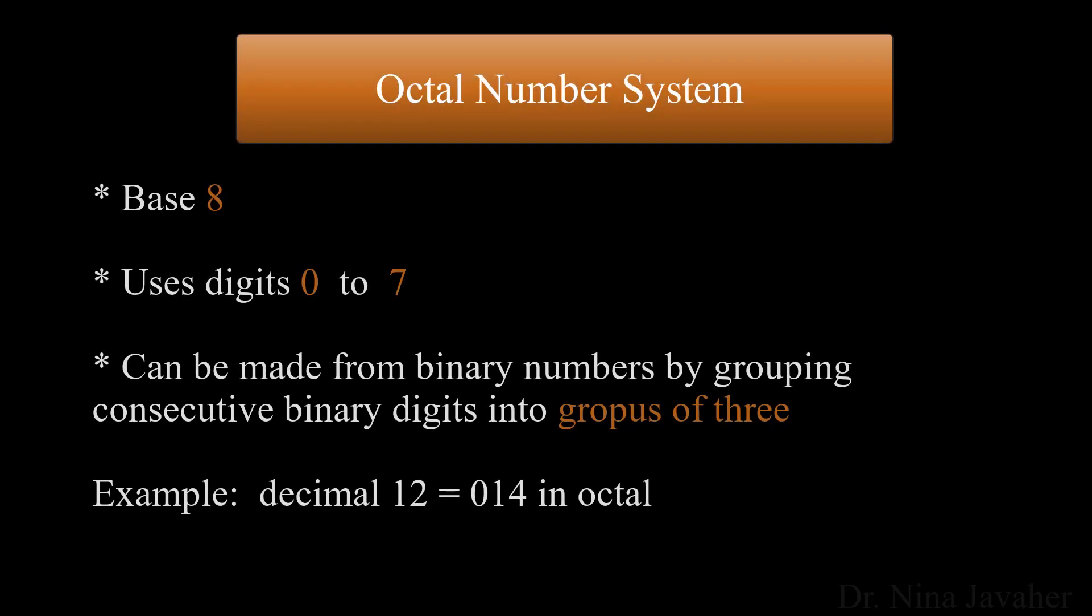The octal number system, or oct, is the base 8 number system, which uses the digits 0 to 7. Octal numerals can be made from binary numbers by grouping consecutive binary digits into groups of 3, starting from the right. For example, the octal representation for decimal 12 is 014.